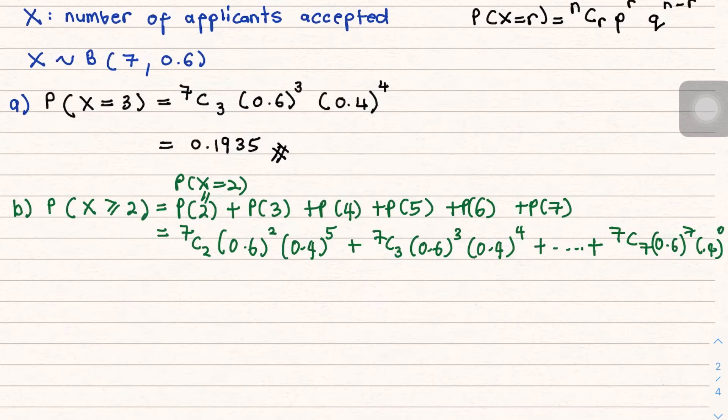So what you can do, instead of calculate one by one like this and plug into the calculator, you can use the complement rule. The complement rule says that if you want P(A), you can always find it as 1 minus P(A bar), where this is your wanted case and this one is the unwanted case.